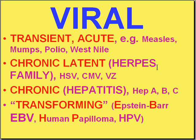We can start out with viruses. There are four patterns of viral diseases. There's a transient acute clinical pattern — things that appear rapidly, perhaps go away rapidly, perhaps never come back, like measles, mumps, polio, West Nile virus infections. There are also the chronic latent viruses. Many of them are in the herpes family, and some of these may give rise to neoplasms. The herpes family of viruses is famous for causing chronic latent diseases which may reoccur many years later.